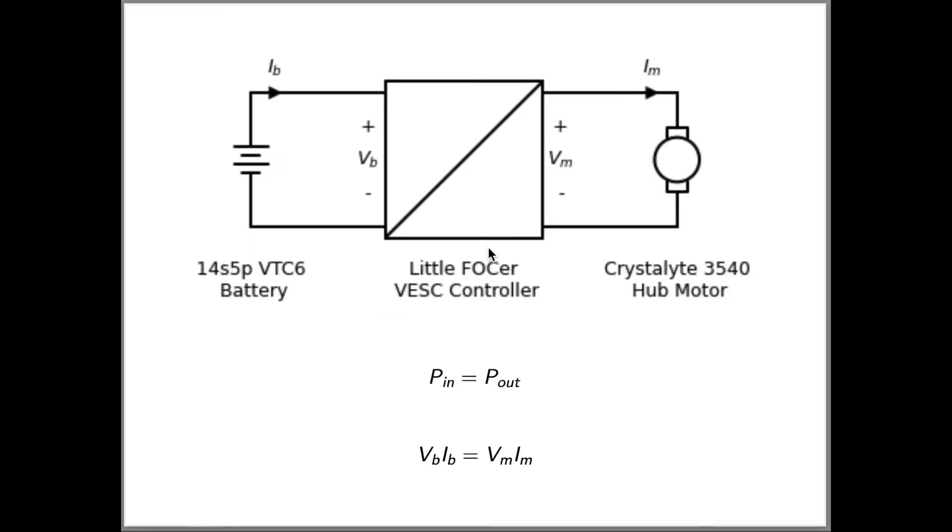What does our simple model of the controller predict for the behavior of the currents and the speed? In a full throttle run, the controller tries to maintain the max motor current of 100 amps.